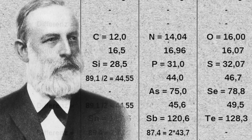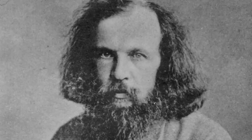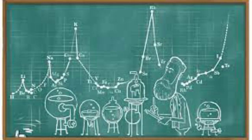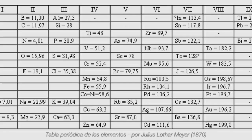Meyer is best known for his part in the periodic classification of the elements. He noted, as J.A.R. Newlands did in England, that if the elements were arranged in the order of their atomic weights, they fell into groups of similar chemical and physical properties repeated at periodic intervals. According to him, if the atomic weights were plotted as ordinates and the atomic volumes as abscissae, the curve obtained a series of maxima and minima, with the most electropositive elements appearing at the peaks of the curve in the order of their atomic weights.